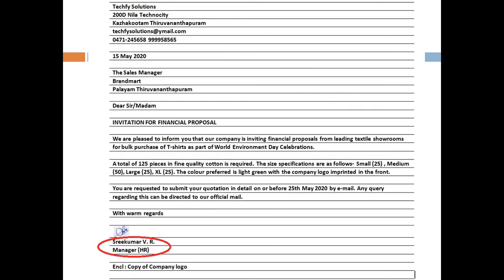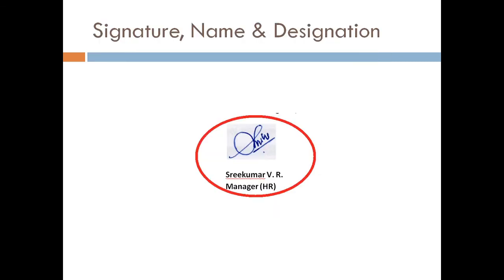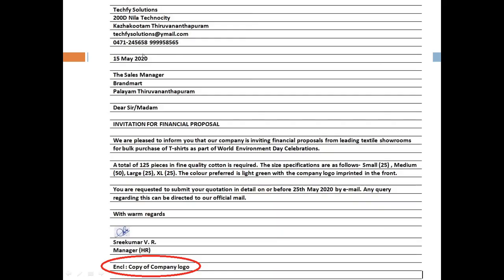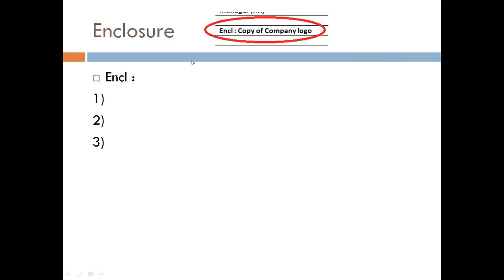The signature should appear before the name and designation of the sender. End closures: if you are attaching any document with the letter, it should be mentioned here. The abbreviation used is 'Encl.'